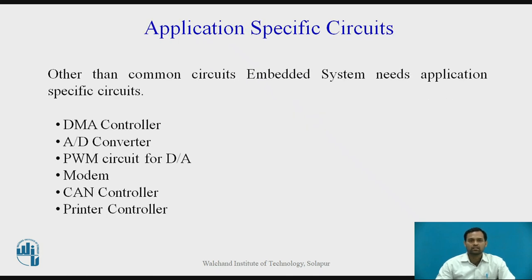Application specific circuits. Other than common circuits, an embedded system needs some application specific circuits for particular uses. Examples include DMA controller (Direct Memory Access), ADC (Analog to Digital Converter), PWM circuit for digital to analog conversion, modem, CAN controller, and printer controller. Such controllers and converters are categorized as application specific circuits.